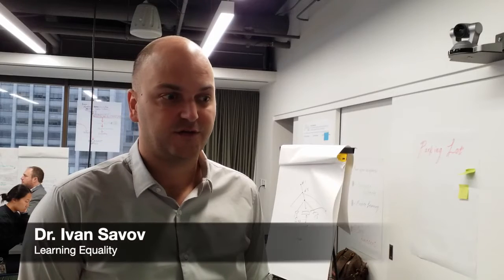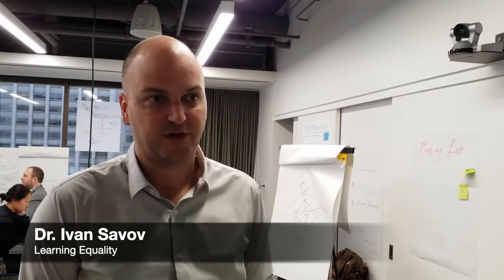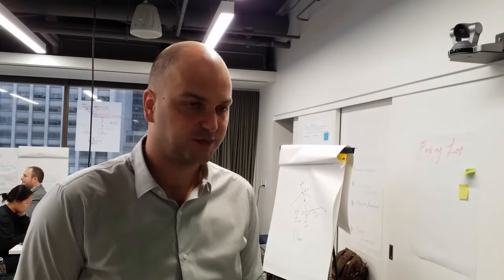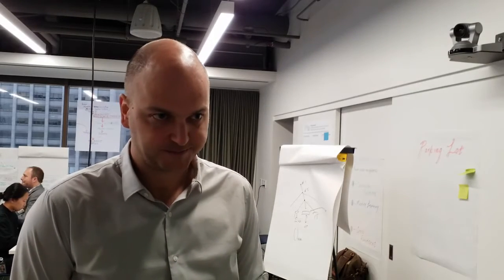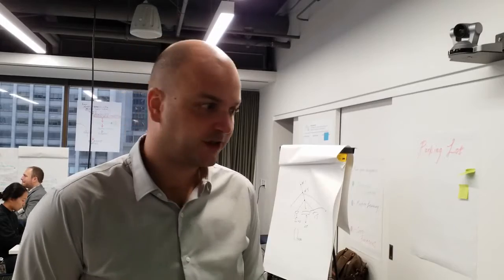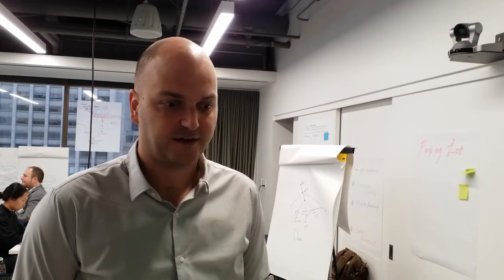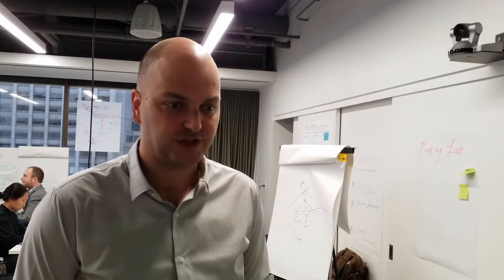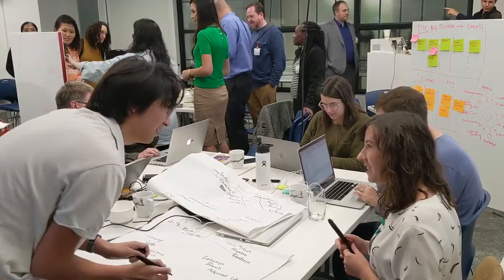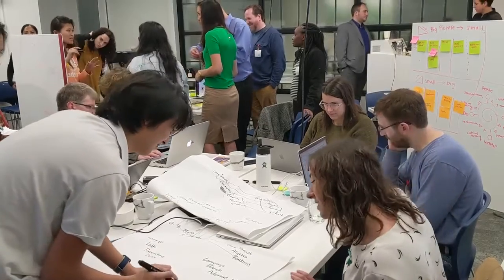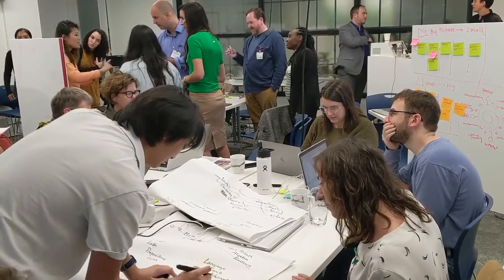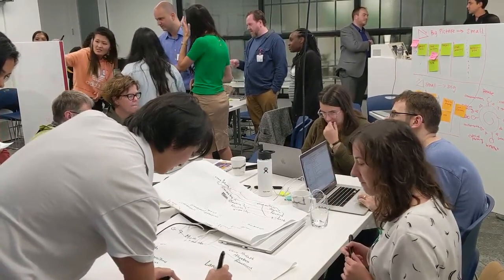Instead of trying to do content alignment, can we find alignments, can we find matchings between curricula? And in this way, align thousands of nodes in one shot. So, how might we identify similarities between different countries' curricular standards, and how might we build a tool to facilitate this process?